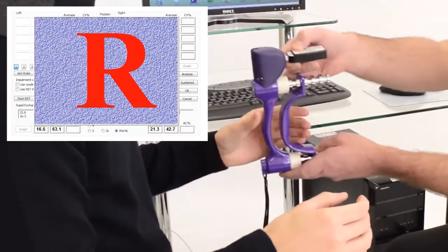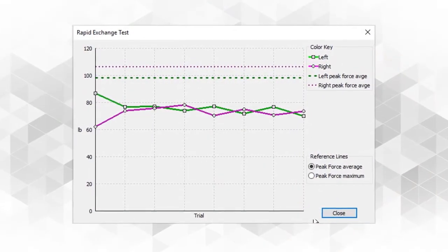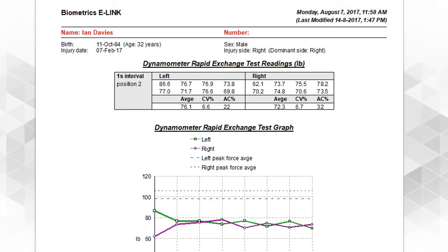The rapid exchange grip test for the detection of submaximal effort is easily performed and the results documented in both graph and table format.